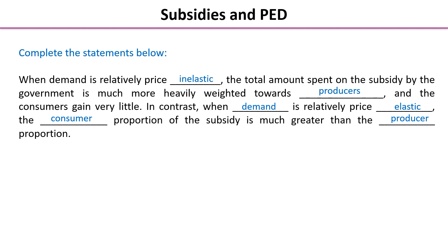So why is this important? It gives us evaluation — we can now start thinking about which markets subsidies might be most effective in. For example, a small subsidy in a price elastic market may have a significant impact on the quantity demanded, thereby solving a market failure perhaps much faster and more effectively than in a market where there's price inelastic demand, where a huge subsidy may be required to increase consumption. You can think about this in your data question, exam question, or homework and start judging whether or not the subsidy would be effective.